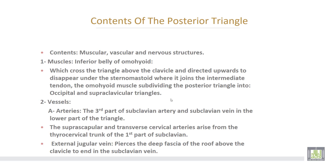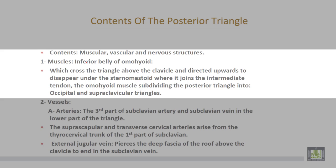The contents of the posterior triangle include muscles found within it. The inferior belly of the omohyoid muscle crosses the triangle above the clavicle, directed upward to disappear under the sternomastoid muscle where it joins the intermediate tendon. The omohyoid muscle subdivides the posterior triangle into the occipital triangle and the supraclavicular triangle.